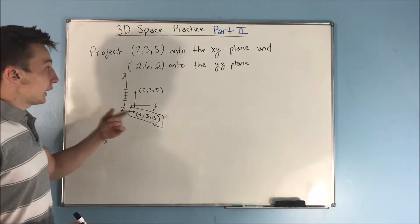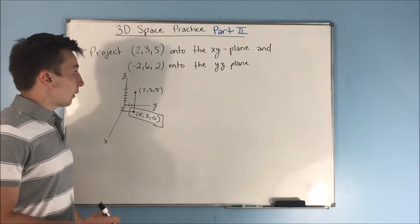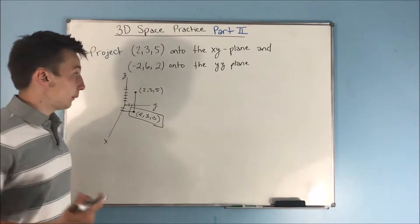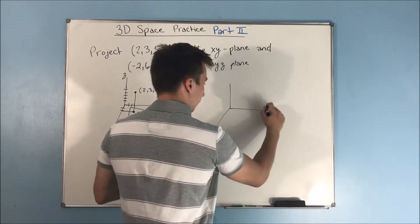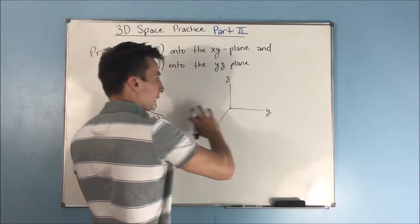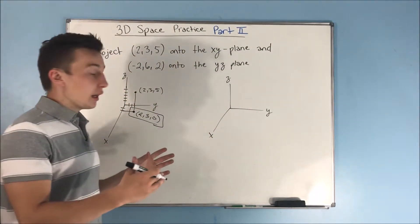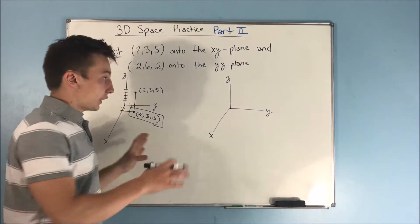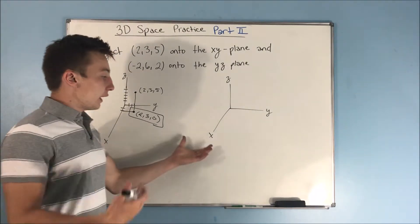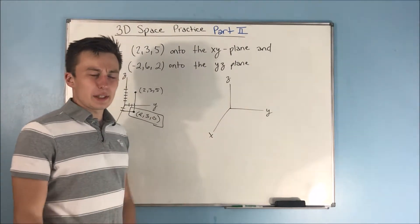So the next part of the problem is asking us to project (-2,6,2) onto the YZ plane. So we have our X, Y, and Z, and our YZ plane is basically just this board. It doesn't, there's no in and out of the board dimension. It's a 2D plane. And the in and out of the board, that's kind of what X is representing here.